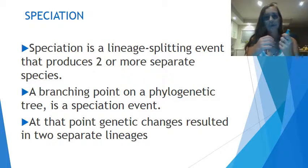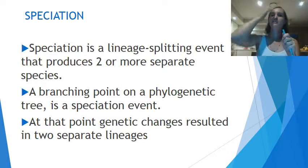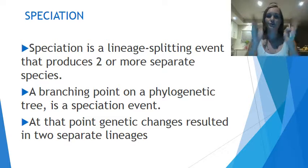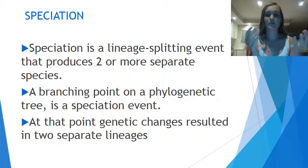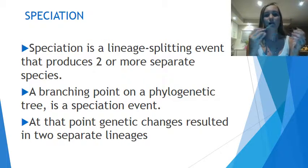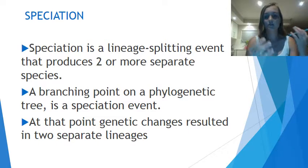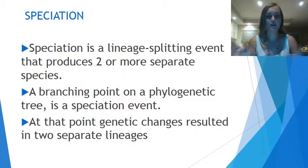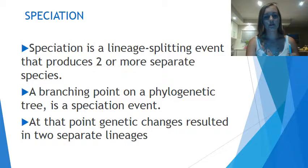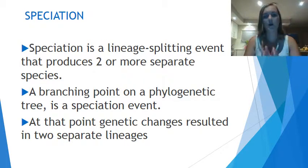It is a lineage splitting event, and what that means is that in the evolutionary tree, it's forming two new branches, which produces two or more separate species. So it is a branching point on the phylogenetic tree — another word to describe the evolutionary tree or timescale. And that speciation event causes two separate lineages from a common ancestor.